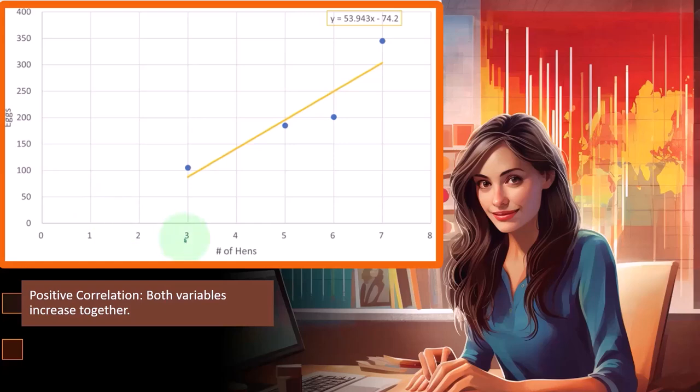And therefore, you would usually plot on the x-axis the independent variable of the hens. Note that if I reversed these, I put the hens on the y and the eggs on the x, we would still have a positive correlation.